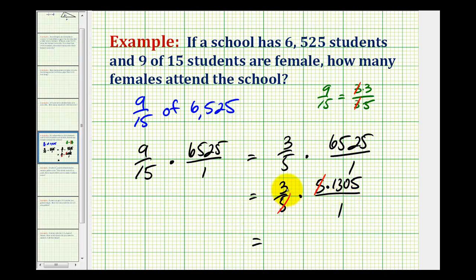So now when we multiply, we're going to have 3 times 1,305, which is 3,915 all over 1, which tells us that we have 3,915 females at this school.